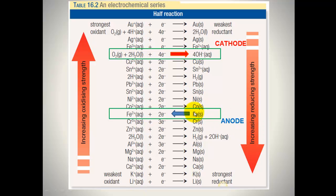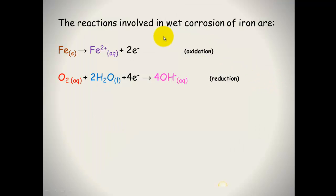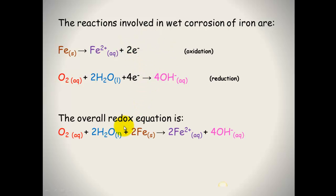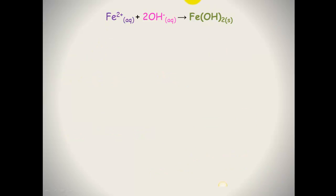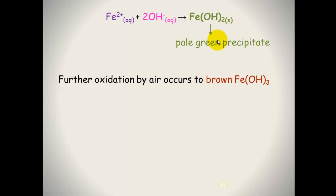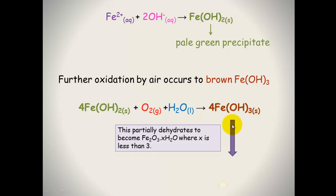We have an oxidation reaction and a reduction reaction occurring. These two reactions can be written as an overall redox reaction. The iron ions and hydroxide form iron(II) hydroxide, a green or pale green solid precipitate. This then undergoes further oxidation with water and oxygen to form iron(III) hydroxide, which partially dehydrates to form iron oxide, commonly known as rust.